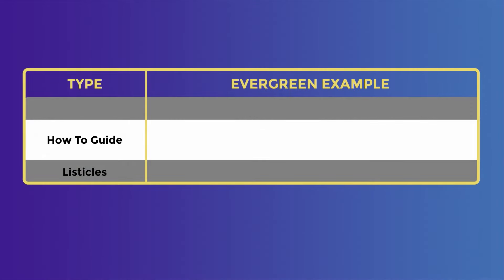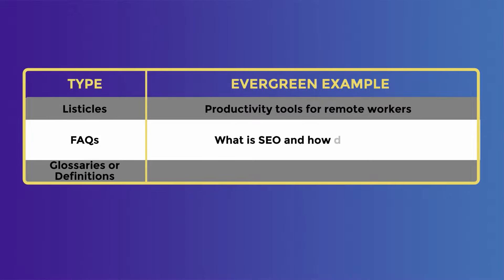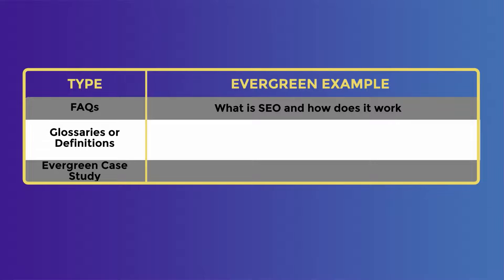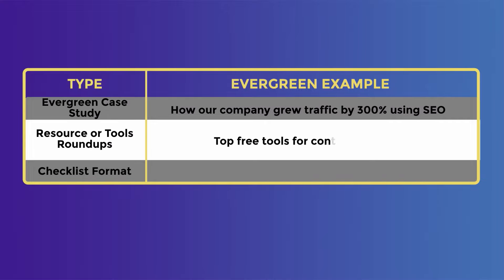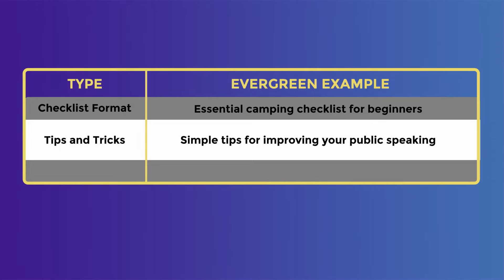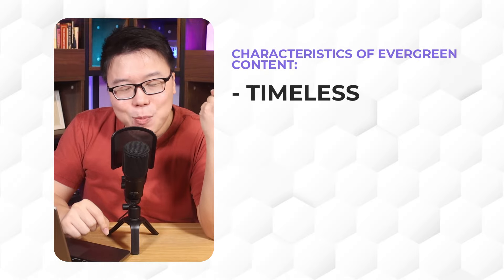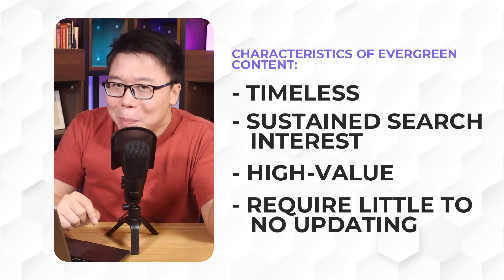For example, if we were to talk about how-to guides, there could be topics like how to start a WordPress blog. Listicles could be productivity tools for remote workers. FAQs could be what is SEO and how does it work. Glossaries or definitions can include glossary of grilling techniques. An evergreen case study can be how our company grew traffic by 300% using SEO. Top free tools for content creation for resources or tools roundup. Essential camping checklist for beginners. And simple tips for improving your public speaking. What do these topics have in common? They are timeless — meaning they do not specify any specific time, date, or event. There is a sustained search interest. They provide high value, and they require little to no update to the content.